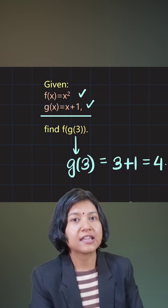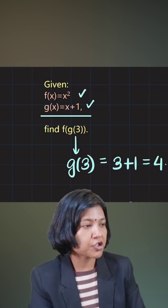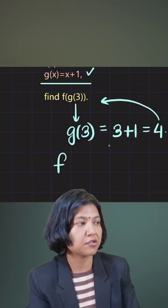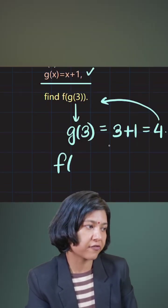Now this 4, which is the output of the first function, should be the input for the second function. Our second function is f. We got the value of g(3) as 4, so that now becomes the input for the second function. When you plug that in, it now becomes f(4).